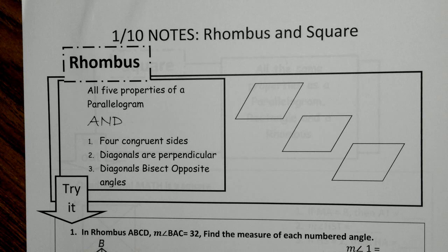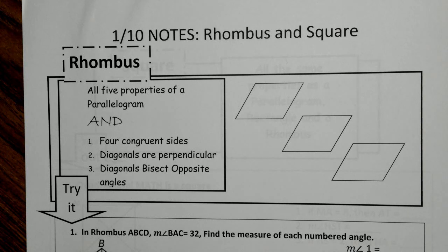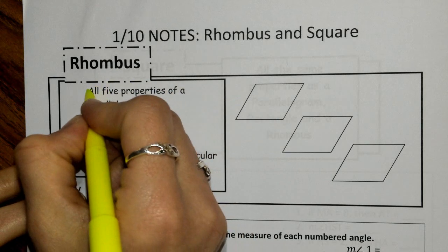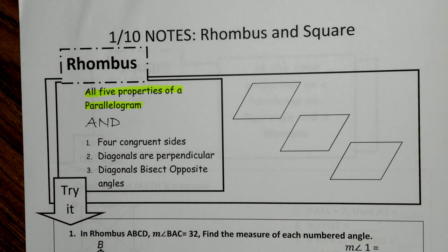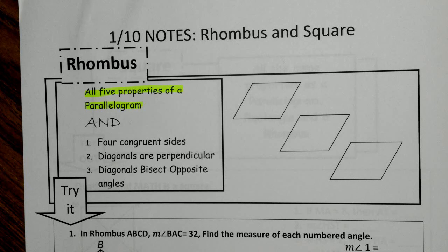With your rhombus, just so you know, if you ever hear anybody say 'rhombi,' that is the plural for rhombus. The properties we're going to have here are all five properties of a parallelogram — just like the rectangle. Those are: opposite sides congruent, opposite sides parallel, opposite angles congruent, diagonals bisect each other, and consecutive angles are supplementary.